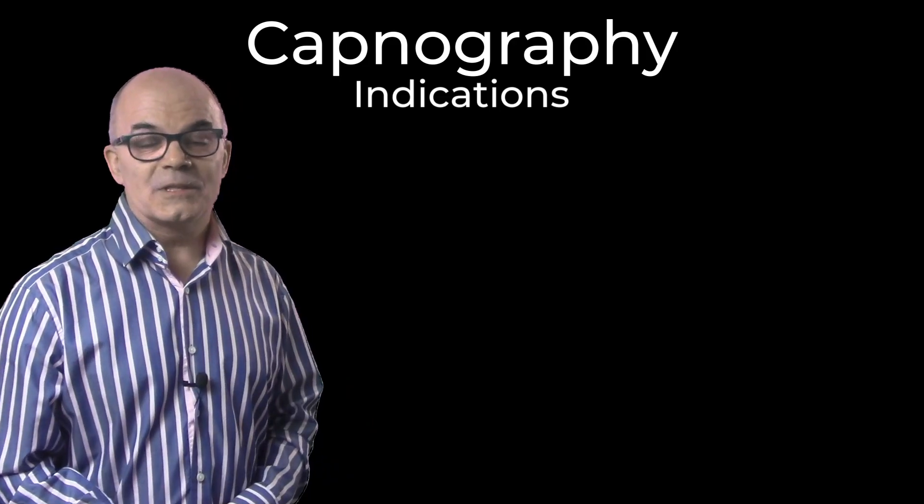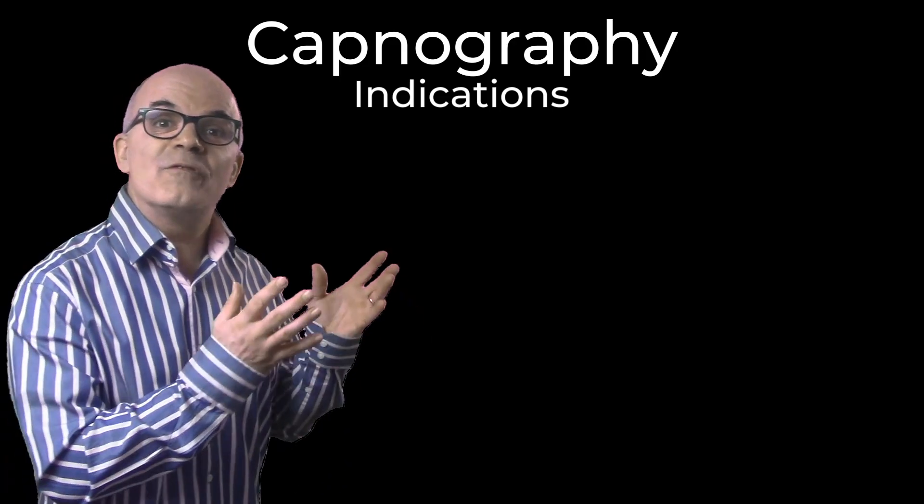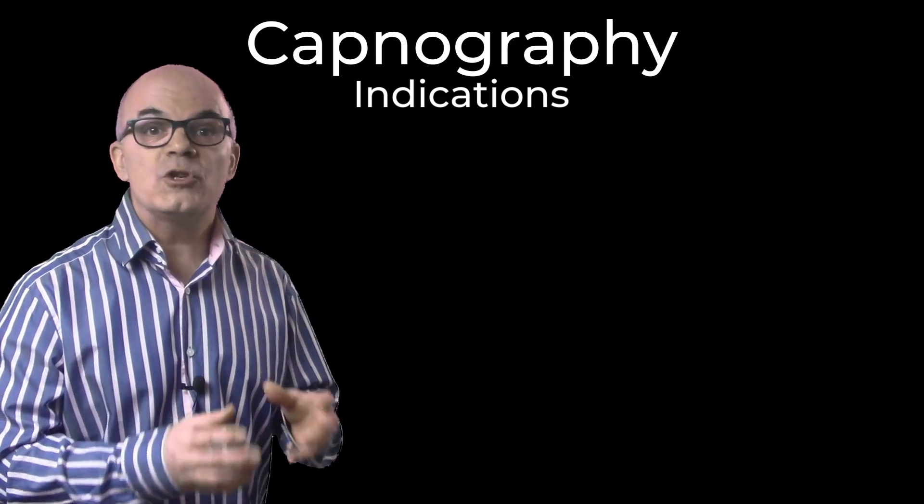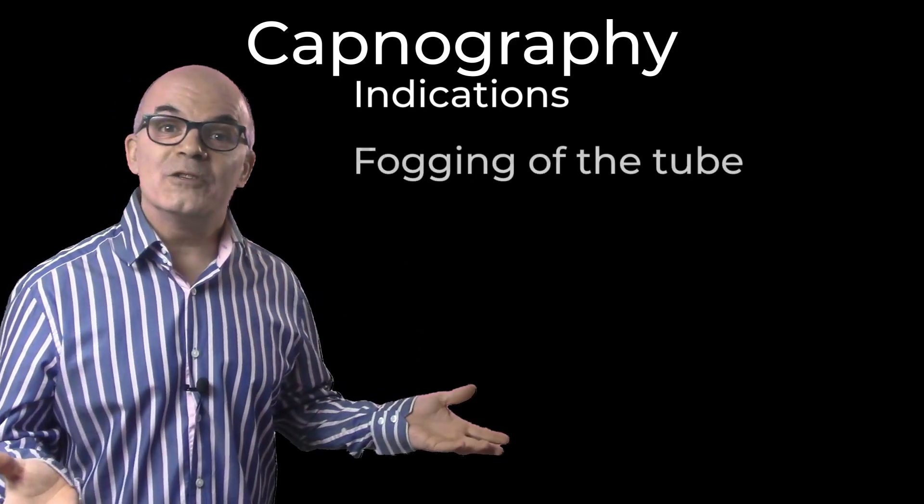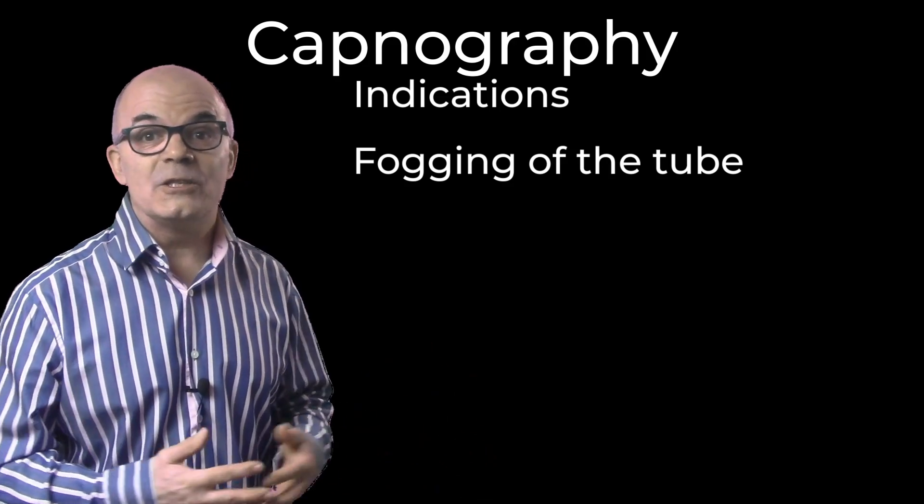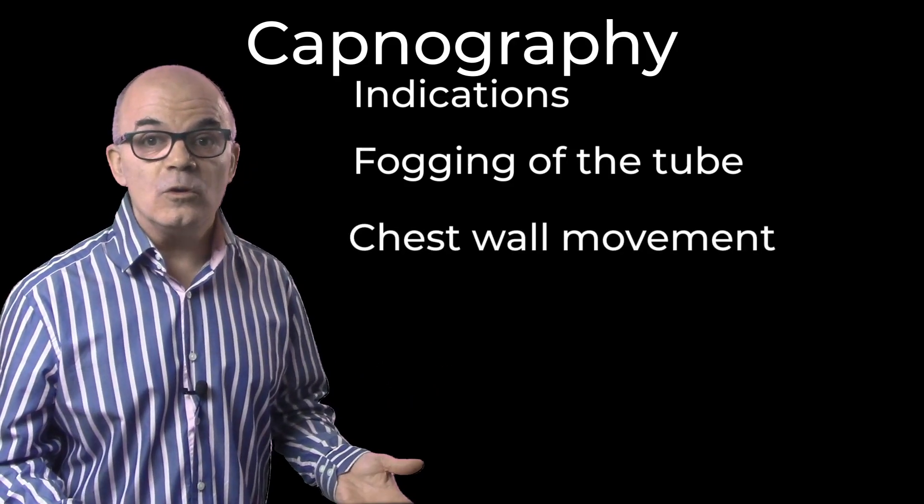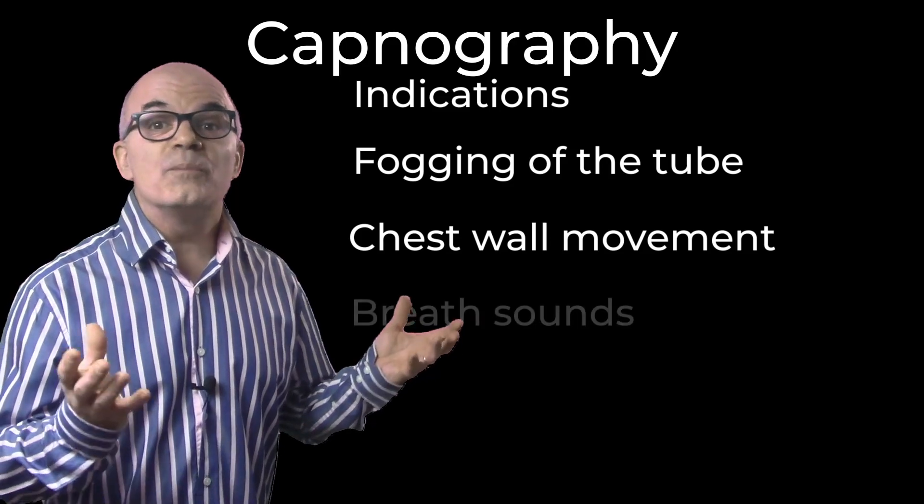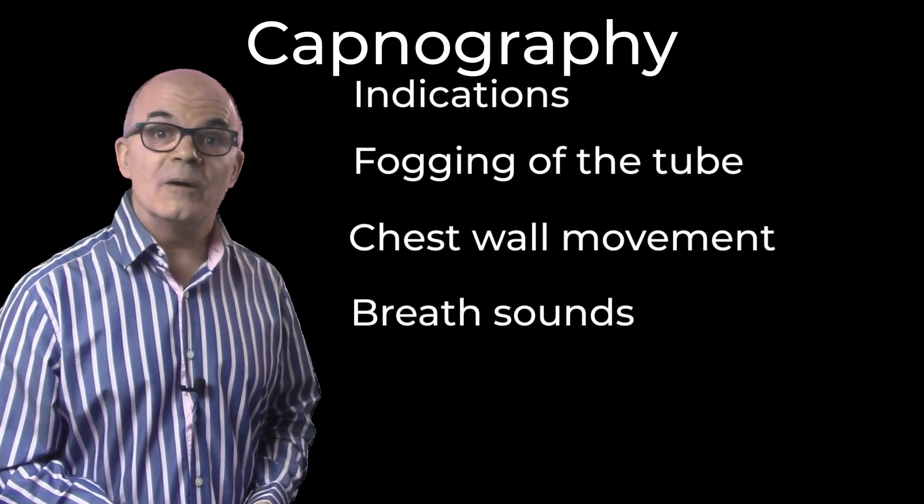Endotracheal tube placement. Confirmation of the placement of the endotracheal tube using clinical signs has been shown to be unreliable. Fogging of the tube will occur with esophageal intubation, as will chest wall movement. Even the use of breath sounds has been shown to not be totally reliable.